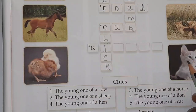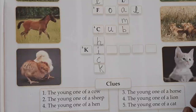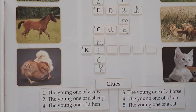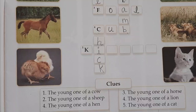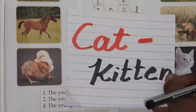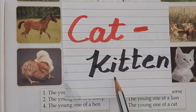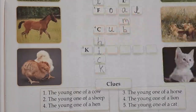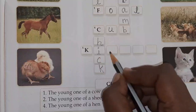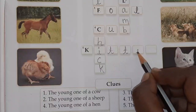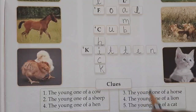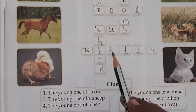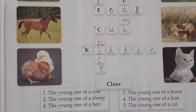And the last one is cat. Here you can see the picture of the cat. Cat's young one — we call it kitten. K-I-double T-E-N. Kitten.